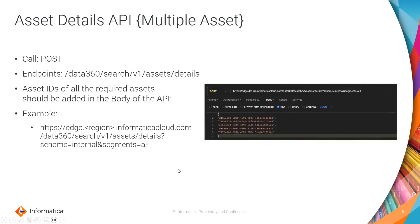In addition to the single asset details API, there is another API to get results for multiple assets at the same time. It is a POST call and the endpoint is data360/search/v1/asset-details. The only requirement is to collect the asset IDs of all assets you need details for, and in the body of the API you can provide them as comma-separated values. Once you run it, it will print all responses in JSON format. I'll show that in my demo as well.